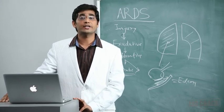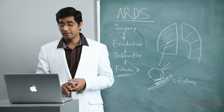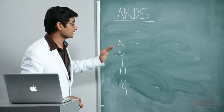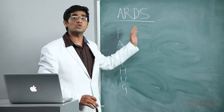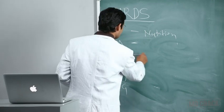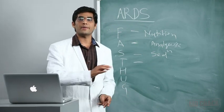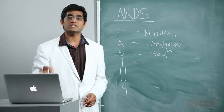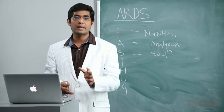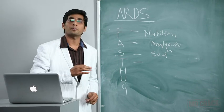Regarding supportive therapy, as ARDS is a common cause of mortality and morbidity in ICU, supportive management is very important. There is a famous mnemonic: FAST HUG. F indicates feeding, that is nutrition. A is analgesia. S is sedation. T is prophylaxis for thromboembolism. If the patient remains bedridden for more than three or four days, there's high chance of pulmonary embolism, so you need to give thromboprophylaxis with enoxaparin or heparin. Dose of enoxaparin is 0.4 ml once daily depending on patient weight.